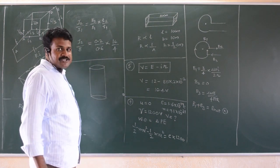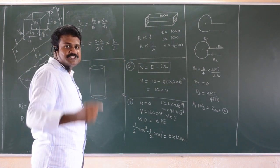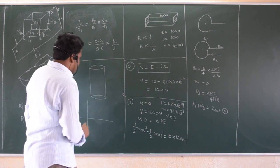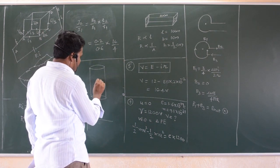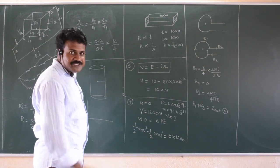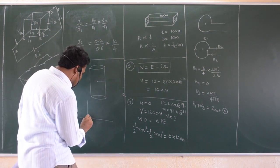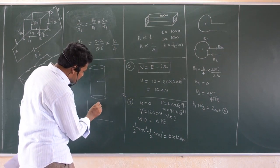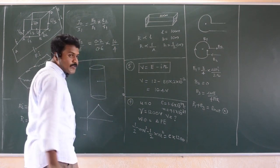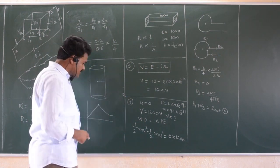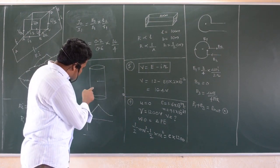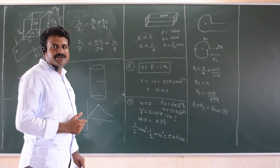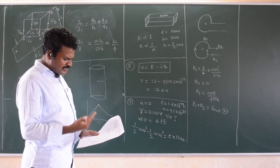It is similar to Gauss's law — how electric field varies in a solid sphere. From center to surface, how magnetic field varies: from center to surface it is proportional to R; after crossing the surface, it is proportional to 1 by R, if it is a solid sphere. If it is a hollow sphere, from center to surface the field is zero, because there is no current — just like Gauss's law.